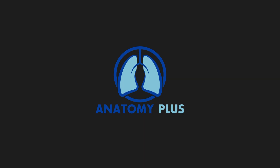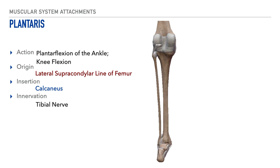Now that we've covered the triceps surae group, let's transition to other muscles of the lower extremity. The next muscle is the plantaris, which is a very thin muscle. Its actions include plantar flexion of the ankle and flexion of the knee. Its origin is on the lateral supracondylar line of the femur, just superior to the lateral femoral condyle. Its insertion is on the calcaneus, and its innervation is the tibial nerve.